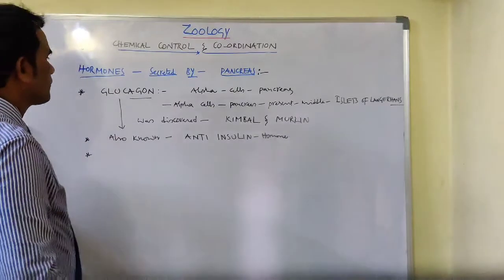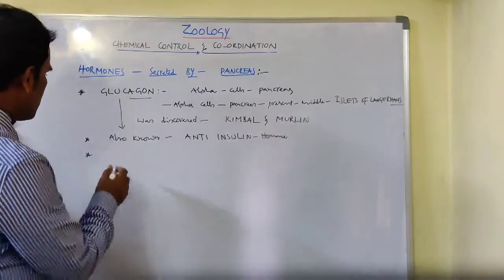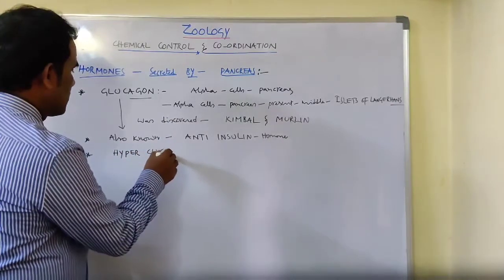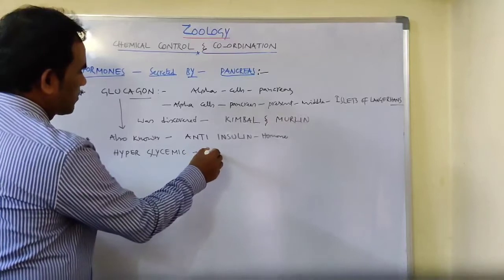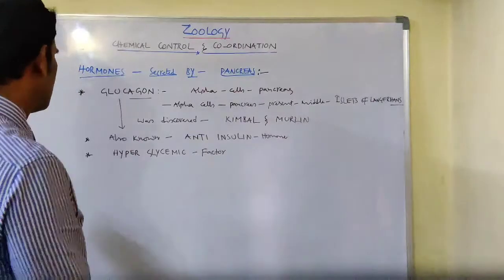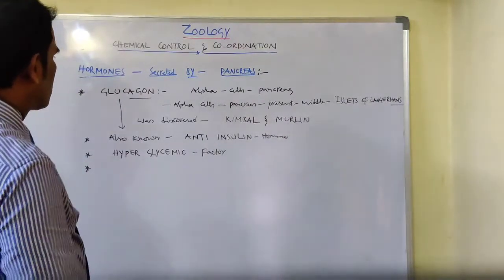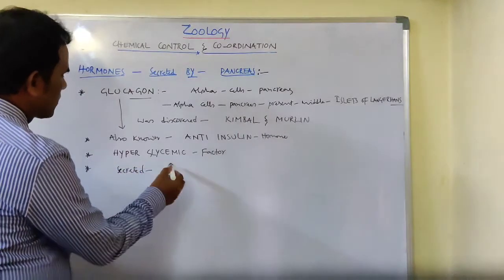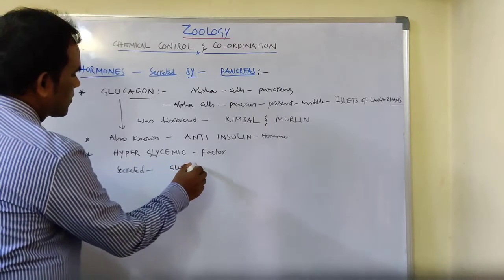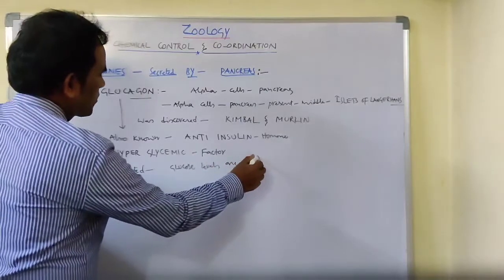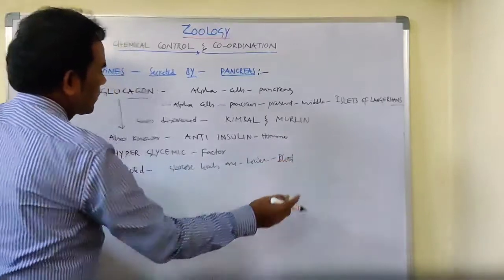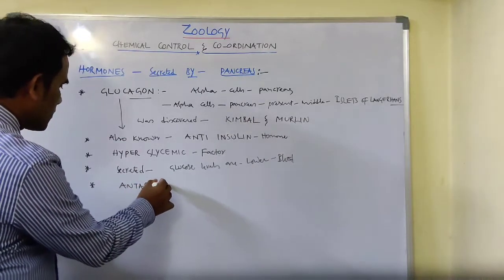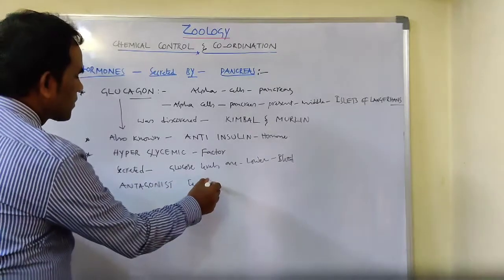Glucagon is mainly concerned with the hyperglycemic factor. This hormone is secreted when the glucose levels are low in the blood. Glucagon is antagonistic to insulin.